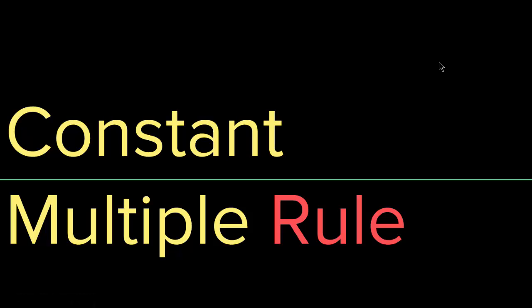Now we know how to take the derivative of just x, or how to take the derivative of a constant. But what happens if you multiply a constant times a variable? What's the rule for that? How do you find the derivative of that?